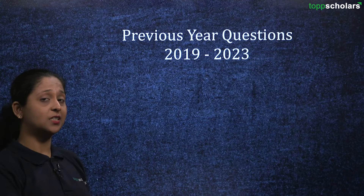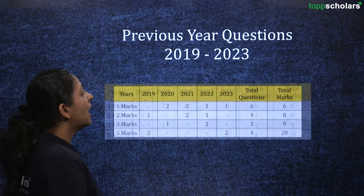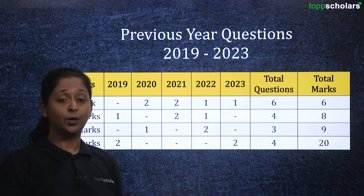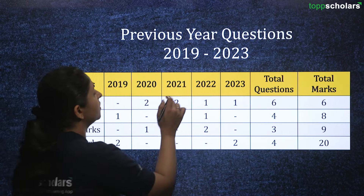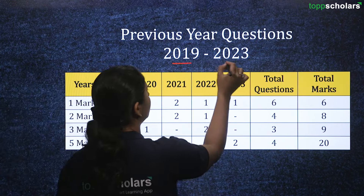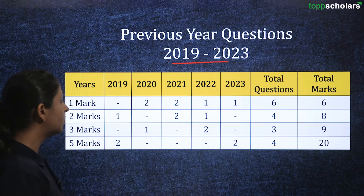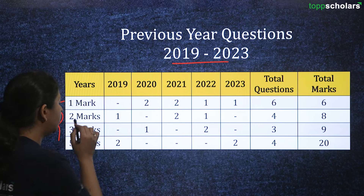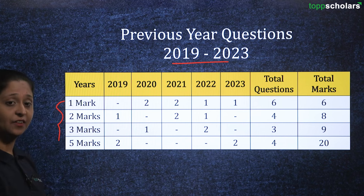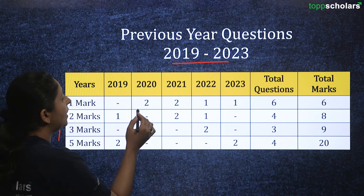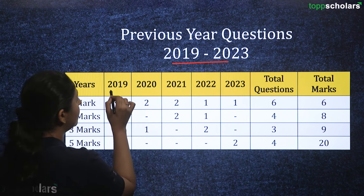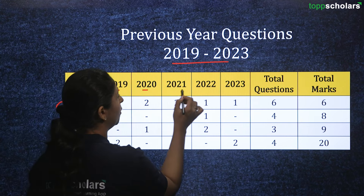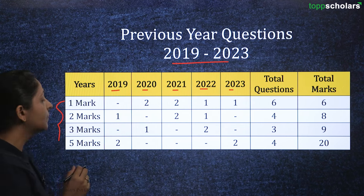First, we will be discussing the past five year questions, and here what we are going to discuss are the previous year questions from the year 2019 to 2023. We have questions ranging from one, two, three and five marks individually, and we will be discussing every year's paper.